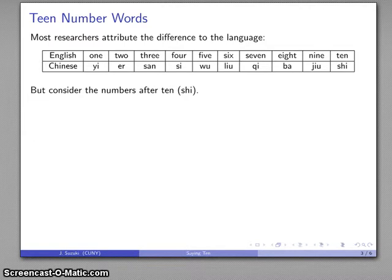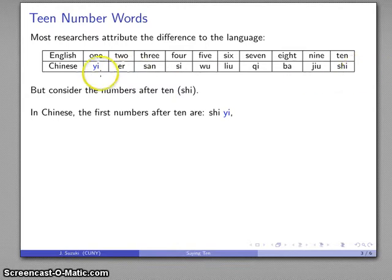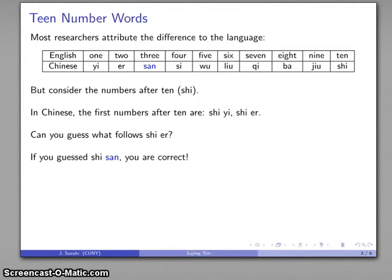Now, what happens after 10, which the Chinese would call shi? Well, the first number after 10 is known as shi yi. And if you translate that, that's 10-1. And the number after that is shi er, 10-2. And on the basis of these numbers after 10, immediately after 10, shi yi, then shi er, can you guess what the number after shi er is going to be? Well, if you guessed it was shi san, you're correct.